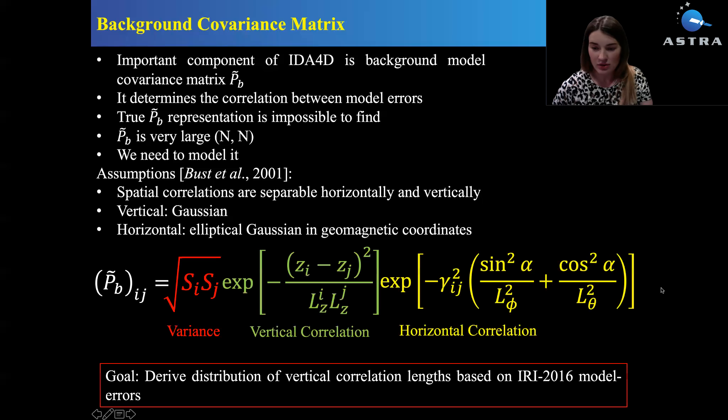This equation explains the formation of this covariance matrix. It can be separated into three different matrices. One would express the variance of model, another one would be the Gaussian that represents the vertical correlations of model errors, and the third matrix would explain the horizontal correlation of model errors. I have a second presentation here at CEDAR that is fully dedicated to the formation of this third matrix for horizontal correlations. This presentation focuses on the vertical component.